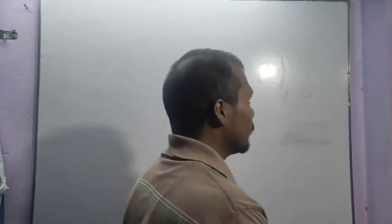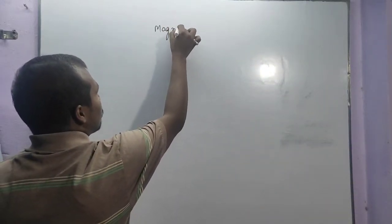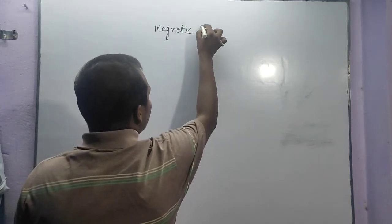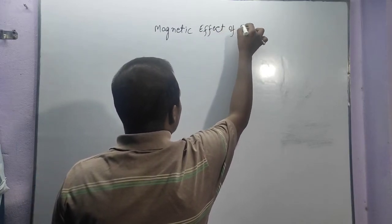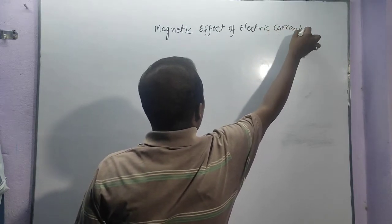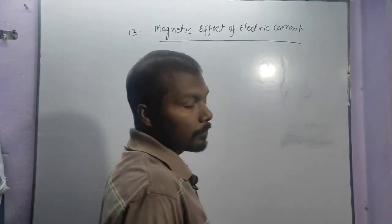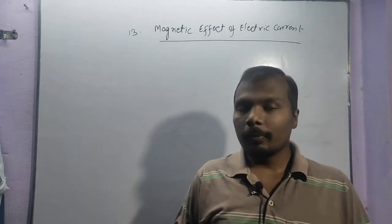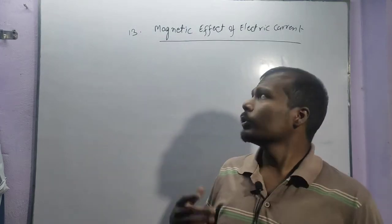Let's start our new chapter: Magnetic Effect of Electric Current. This is chapter number 13. In this chapter we will study about the magnets, their properties and behavior.